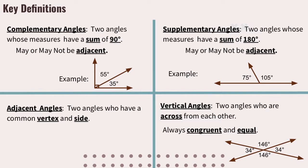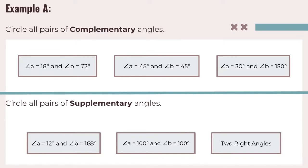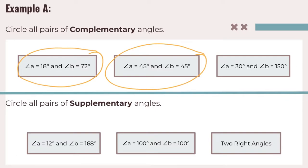Now let's take a look at some of these relationships in Example A. We have two tasks: the first asks us to circle all the pairs of complementary angles. Remember, complementary angles add up to 90. Starting with 18 and 72: 18 plus 72 is 90, so those are complementary — we'll circle that. 45 plus 45 also equals 90, so that's complementary as well. 30 plus 150 equals 180, not 90, so they are not complementary — we will not circle that one.